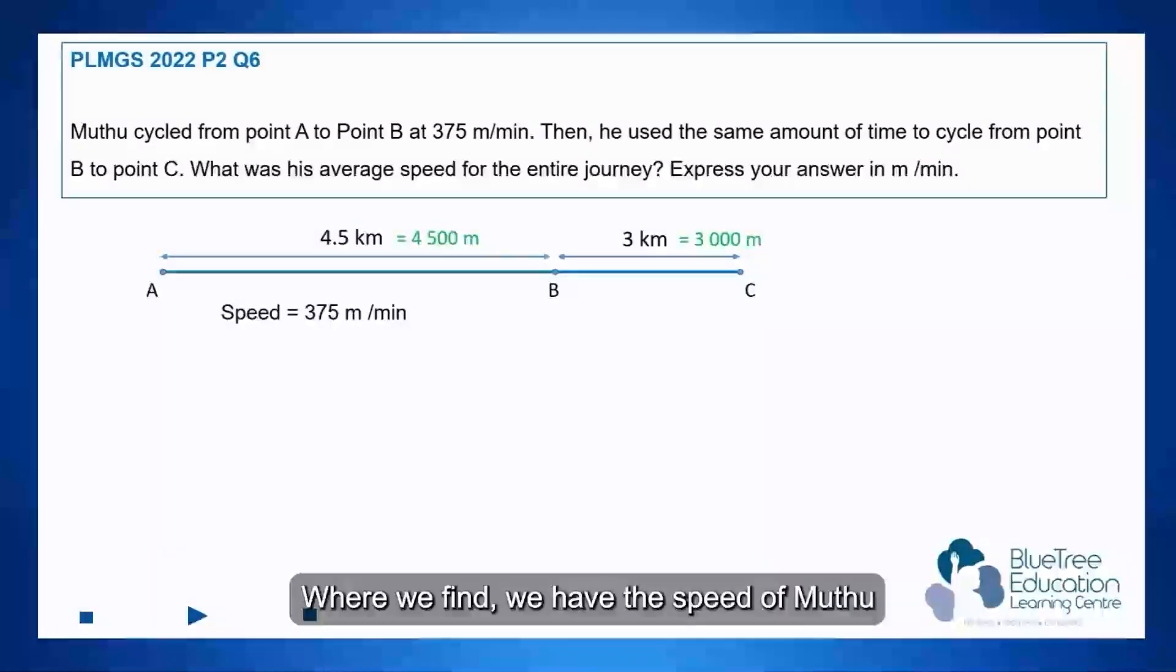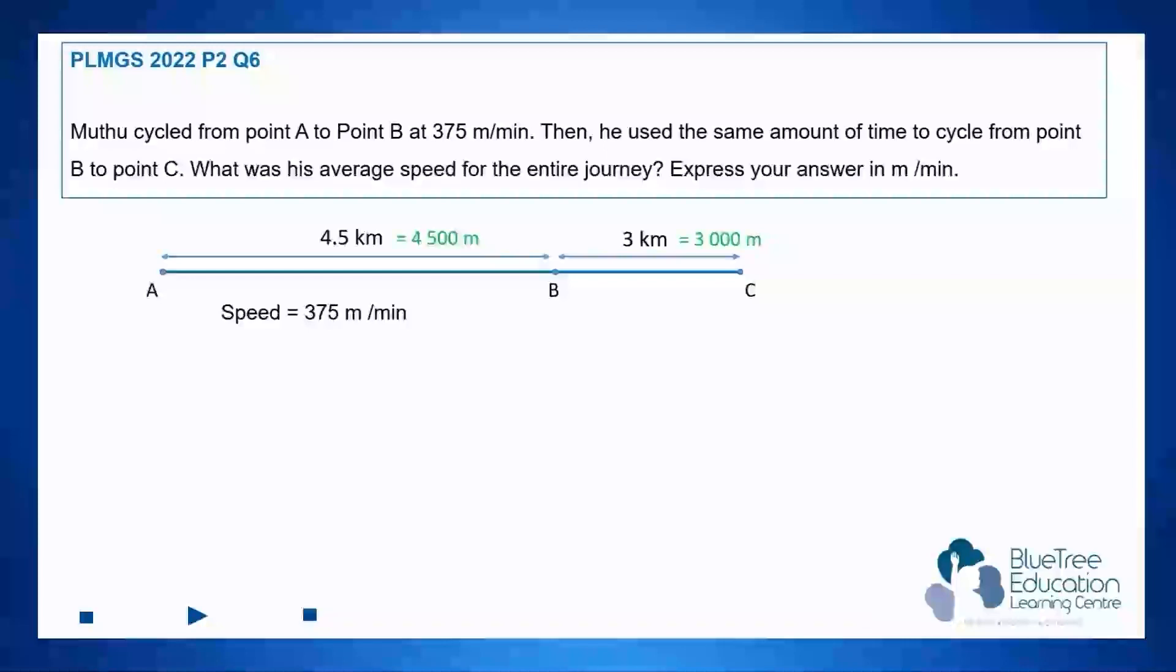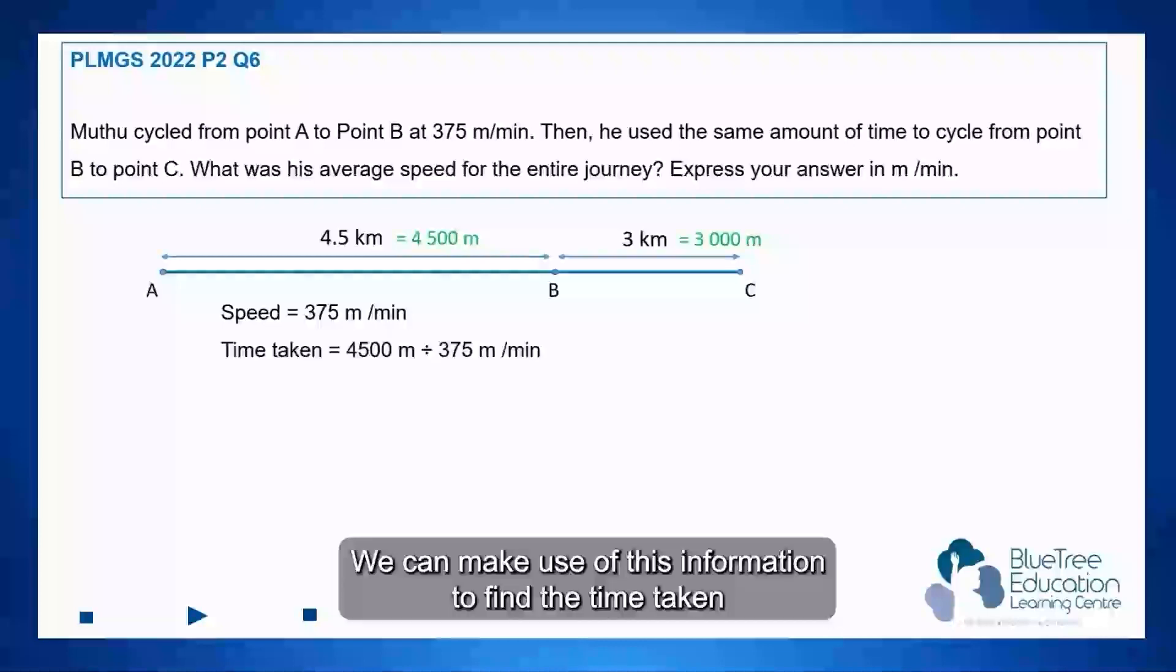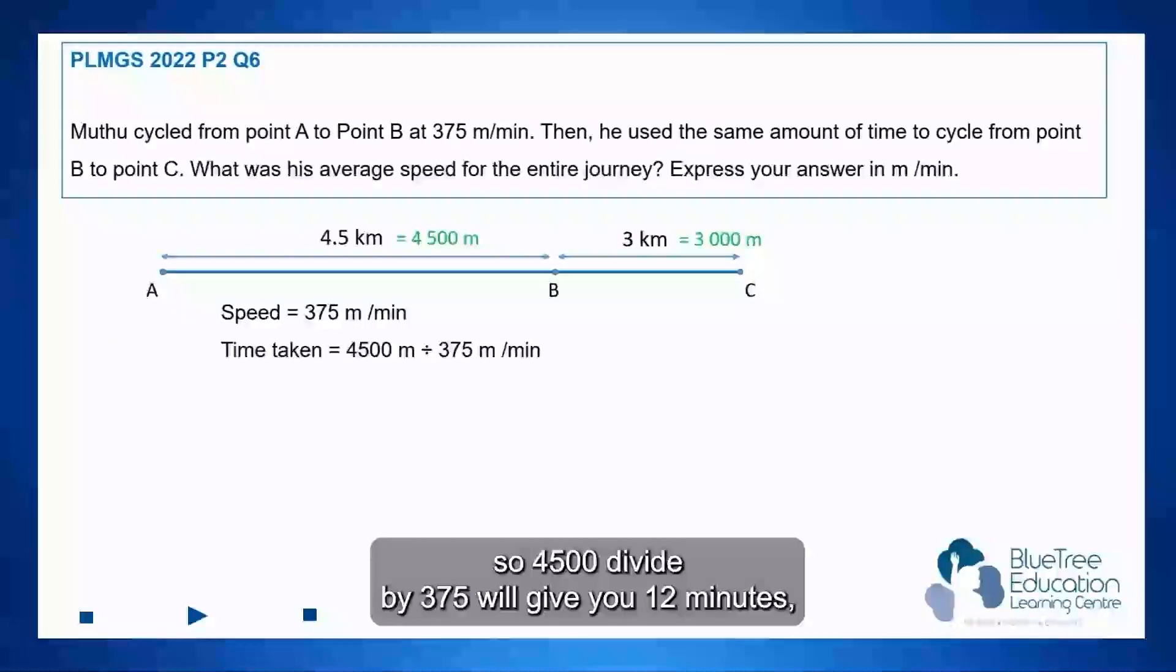We have the speed of Mutu and the distance covered by Mutu from point A to point B is 375 meters per minute. We can make use of this information to find the time taken. So 4500 divided by 375 will give you 12 minutes.